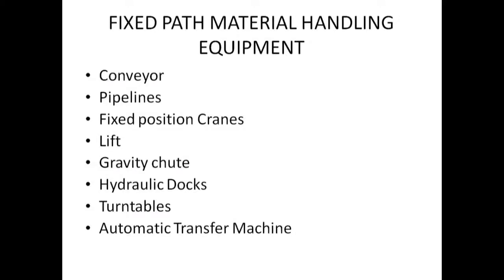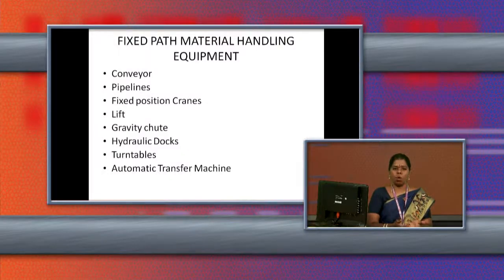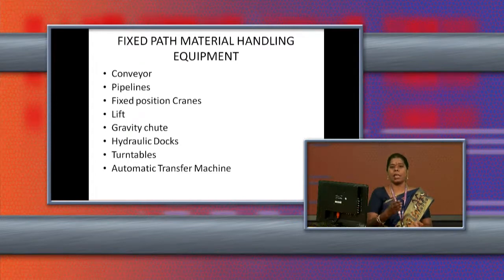The next fixed path equipment is the lift. We all know there are lifts in every organization, malls, hotels, and hospitals. They carry people. Similarly, lifts are used to carry materials in manufacturing organizations — from the ground floor to the top floor. The lift is a fixed path material handling equipment because it cannot be moved from one place to another; it stays in one particular place, and materials are moved from top to bottom or bottom to top.